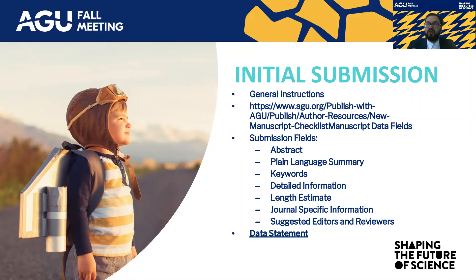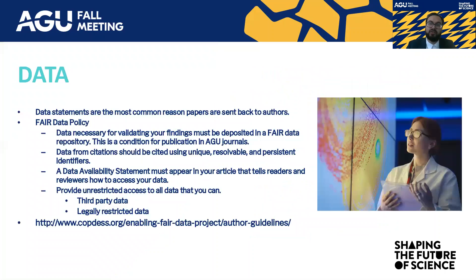There's one journal that has a hard length restriction and will not consider papers over 12 publication units at time of recording, and that is GRL. To finish off your first submission, we have the suggested editors and reviewers tab. Remember that at least three suggested reviewers are required for submission, and you can find more information about the journal's editorial board in the about tab on the publish with AGU page.